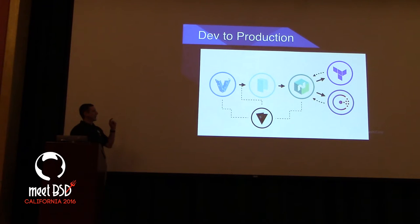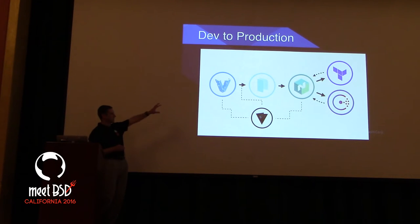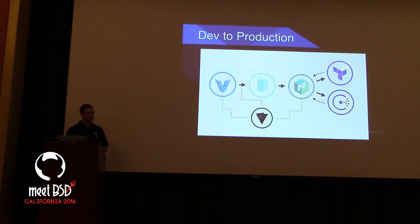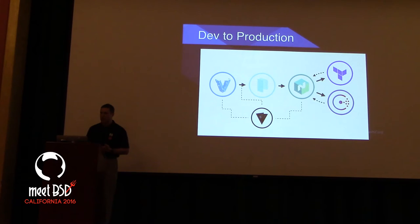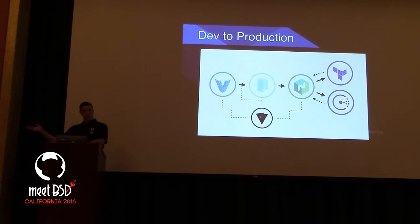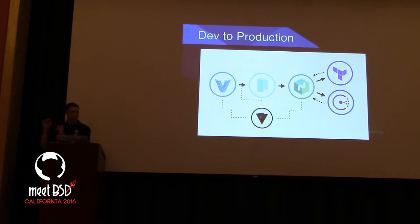Once you have an application or an idea for an application, you develop it, you do something on your laptop, and eventually you get into production where the application actually spends most of its life. It takes maybe three to six months for an application at normal web scale companies to be developed and taken to production. But then it runs for three plus years. That's production. You want to have that process from laptop to production be as seamless as possible.